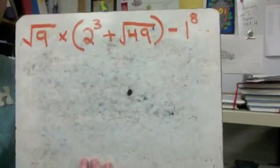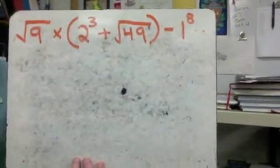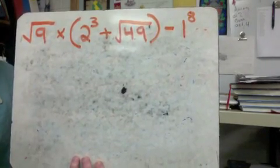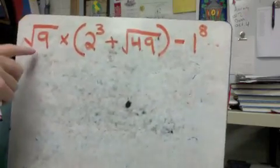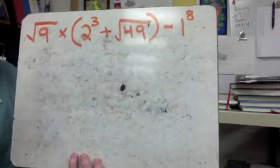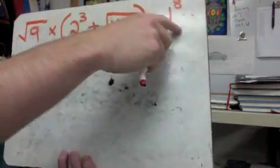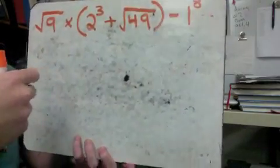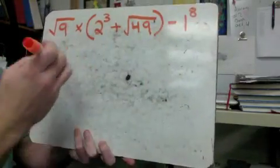This problem looks a lot more confusing than it has to, and that's where the simplifying step comes in. Before you start the problem at all, what I'm asking you to do is change anything that's a square root just to a regular old number and bring it straight down, just like we've done before. Change everything that's got an exponent to its regular standard form number and bring it straight down. So before you do anything, let's change these to regular numbers.